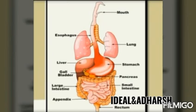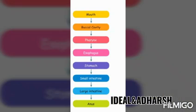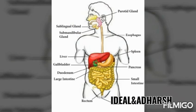This picture helps us understand the digestive system, starting from the mouth to the anus. The flowchart of the digestive system starts with the mouth and ends with the anus: mouth, buccal cavity, esophagus, stomach, small intestine, large intestine, and anus. The total length from mouth to anus is 6 to 9 meters. This picture shows how a normal human digestive system looks.